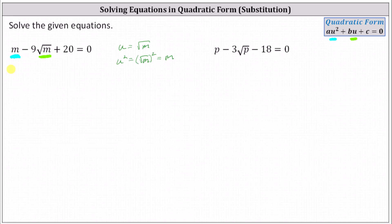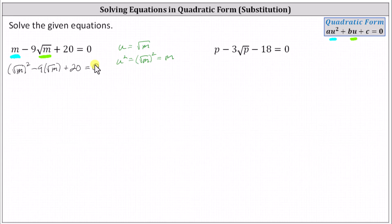If we wanted to, we could replace m with the square of the square root of m to make it more resemble a quadratic equation. Or we could replace the square root of m with u and write the equation as u squared minus nine u plus 20 equals zero.